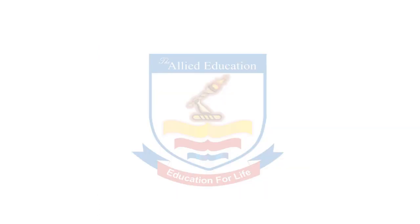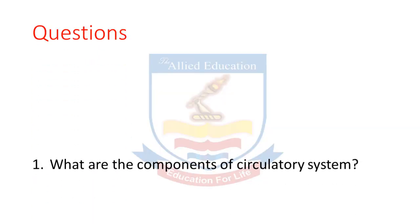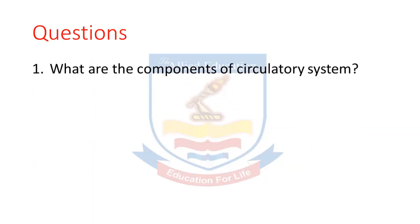Aaj ke topic se related questions: Pehla question hai — what are the components of the circulatory system? Circulatory system ke components hain: heart, blood aur blood vessels. Teen tarah ki blood vessels hain: arteries, capillaries aur veins.